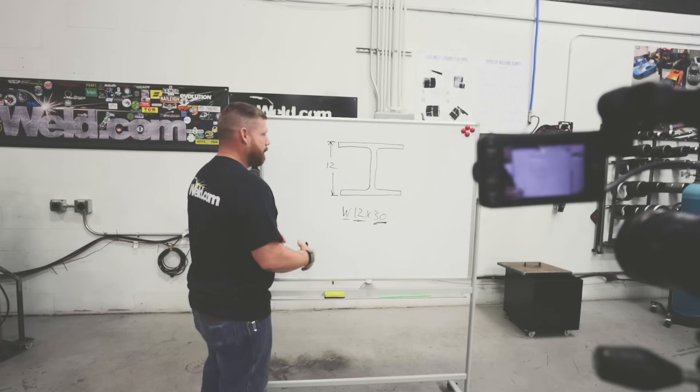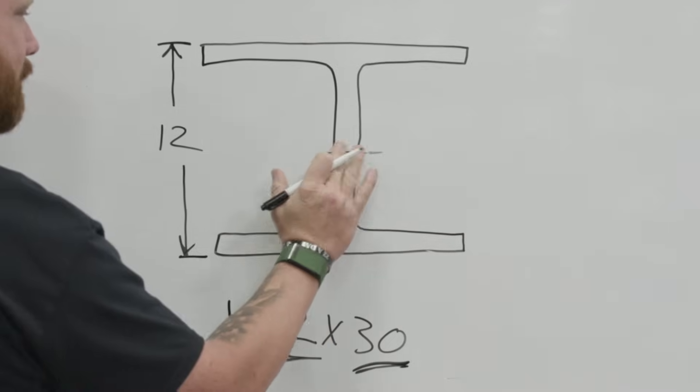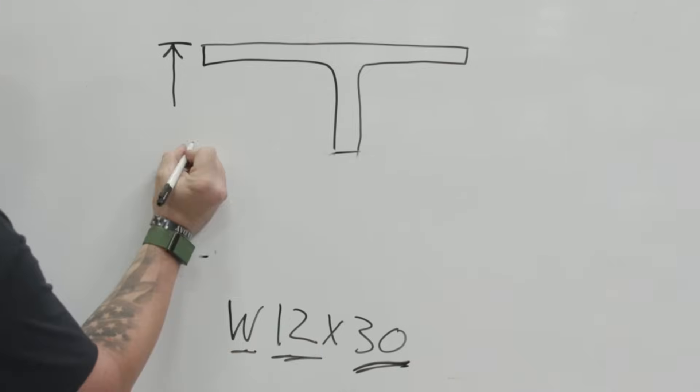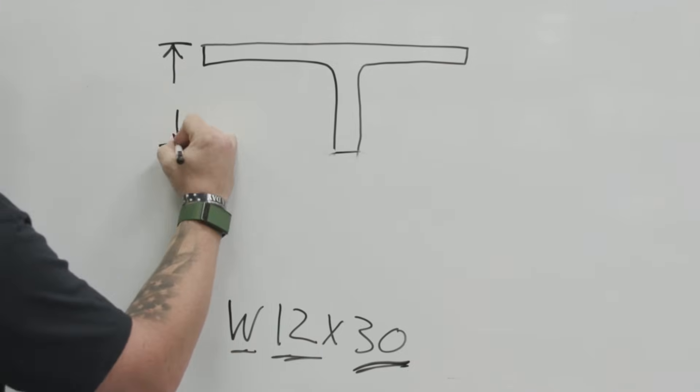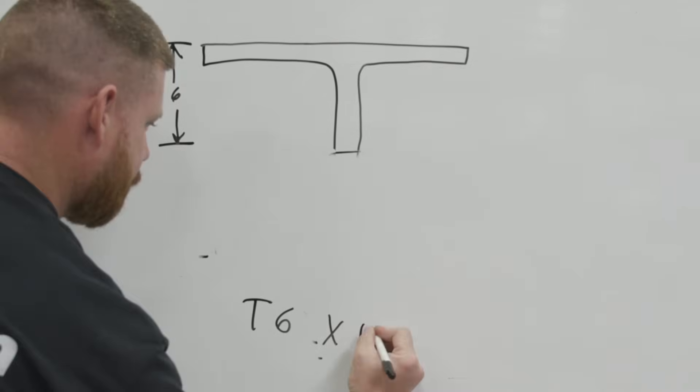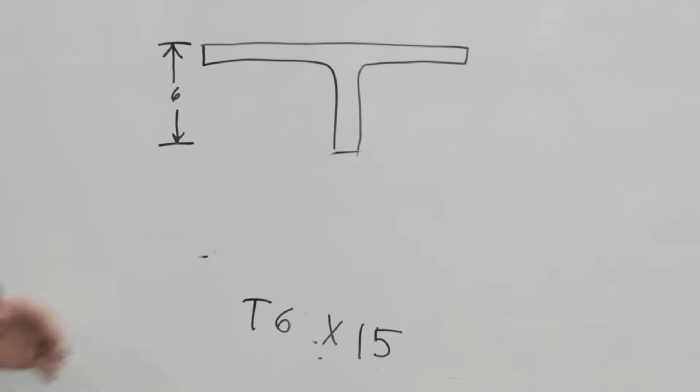Likewise, if I had a T-beam, essentially all that is is the I-beam is cut in half, right? So we just get rid of this section here. So now with my T-section, if this was made from that original W 12 by 30, this is now going to be a T6 by, you guessed it, 15. So that'll be your T6 by 15.